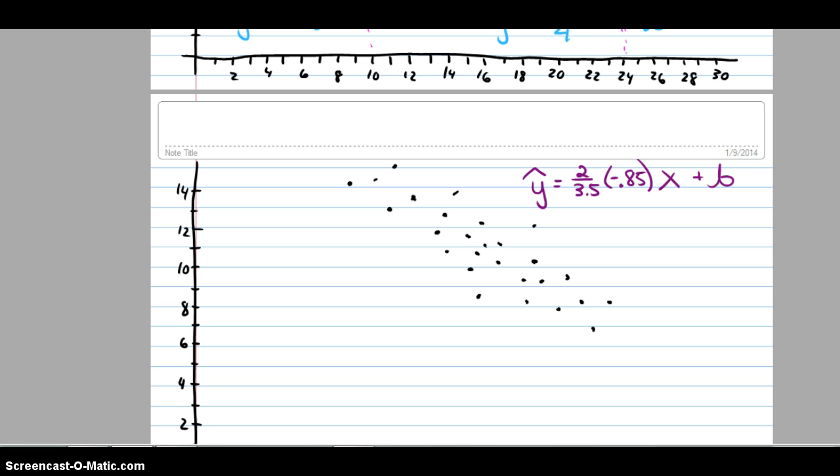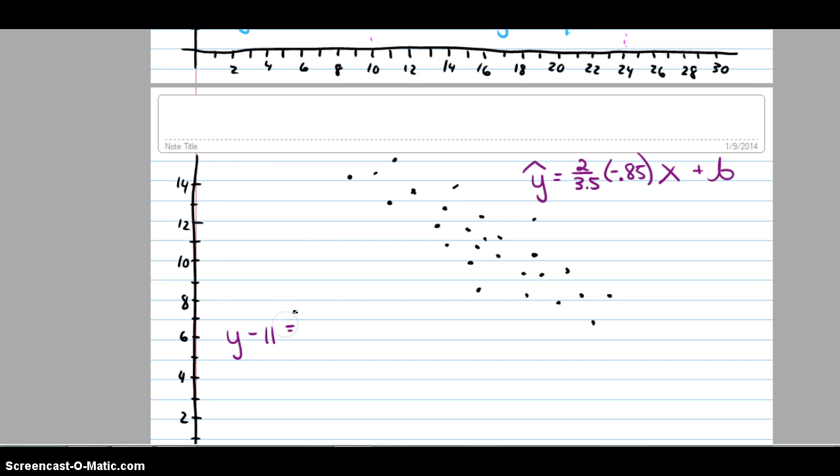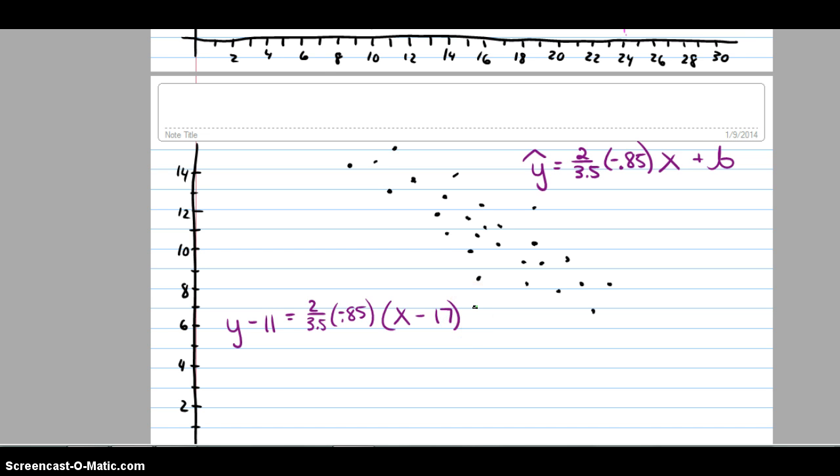To find that y-intercept, I would use the point-slope form. y minus the y-bar that we found, 11, equals 2 over 3.5 times negative 0.85x minus 17. 2 divided by 3.5 times negative 0.85x, I can round that to a negative 0.49x, but when I take this quantity times the 17, I'm not going to use that rounded negative 0.49x, I'm going to put those exact numbers in.